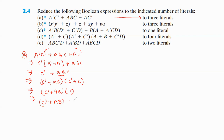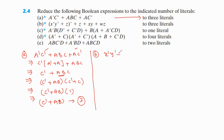We can see here only three literals: C', A, and B. This is the first problem. Next problem is: x'y' + z̄' + wz. We have to minimize to three literals only.